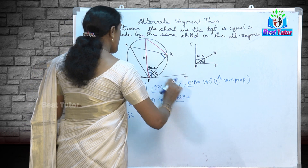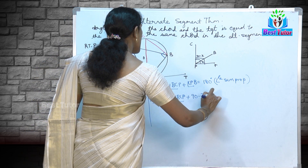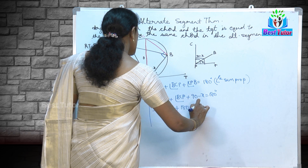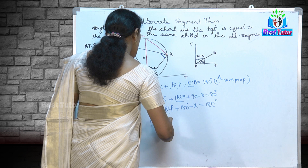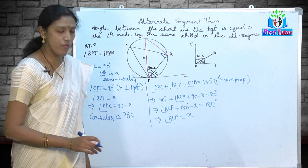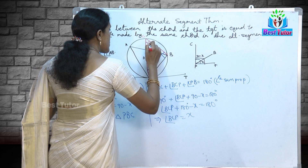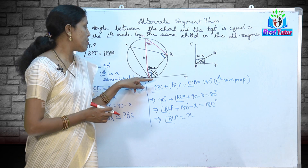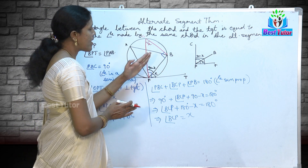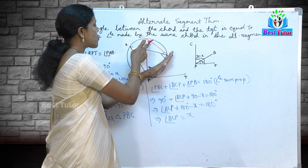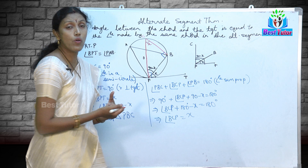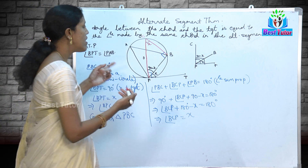Angle PBC is 90 degrees and angle CPB is 90 minus x. So: 90 + angle BCP + (90 − x) = 180 degrees, which gives angle BCP = x degrees. So we have proved that this angle equals x. Now PB is a chord, so PB divides the circle into two segments. Angles in the same segment are equal — this is the angle property we have learned.